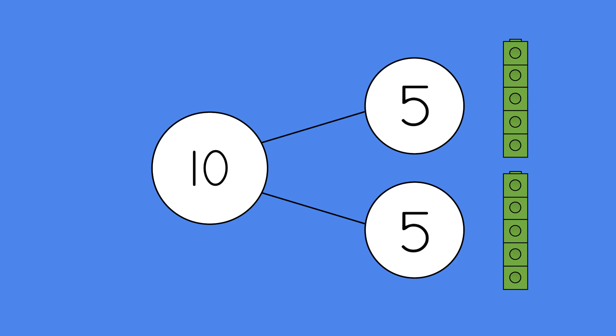Let's count both parts together to make sure it makes our whole 10. 1, 2, 3, 4, 5, 6, 7, 8, 9, 10. These two parts make the whole.